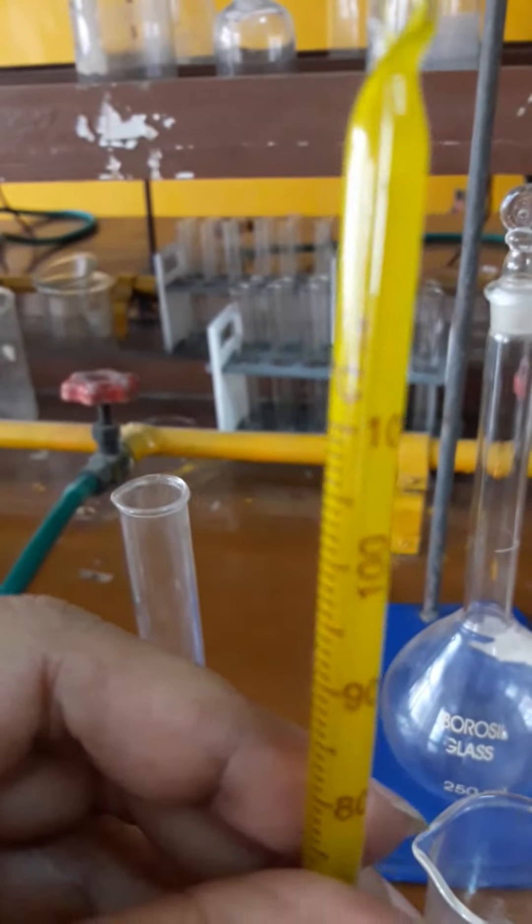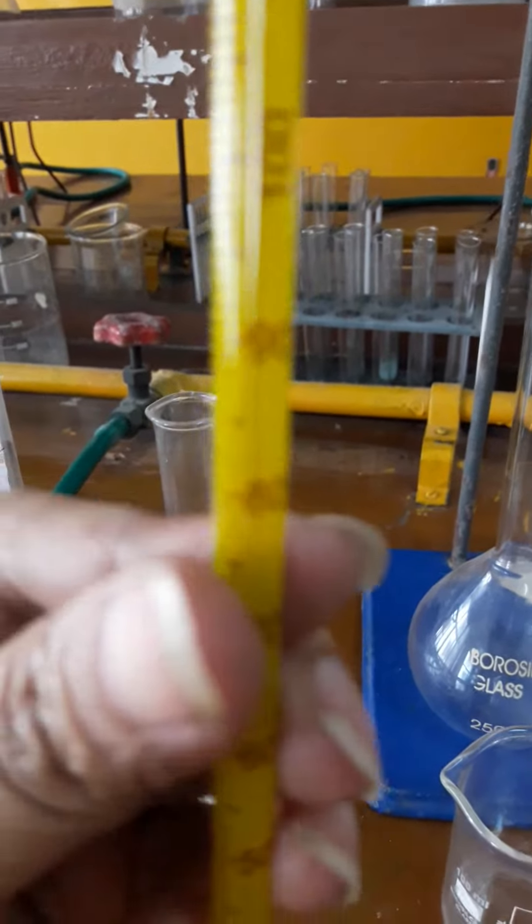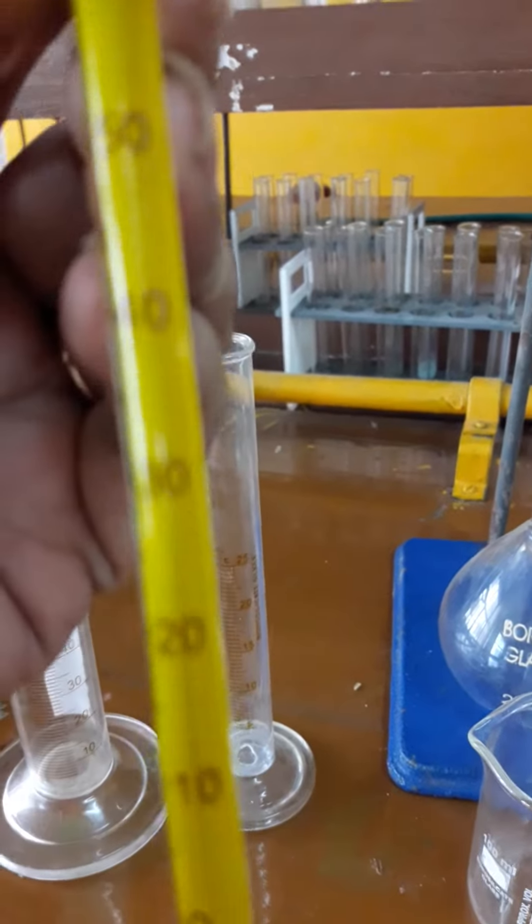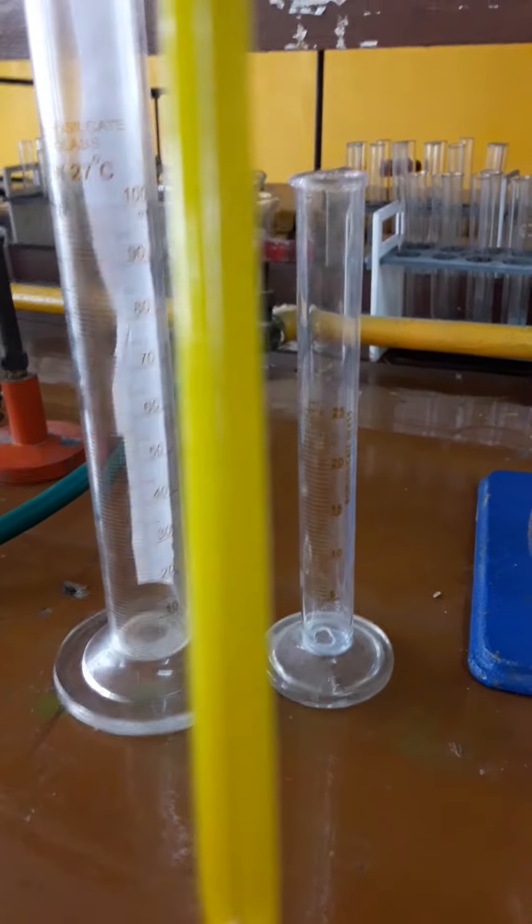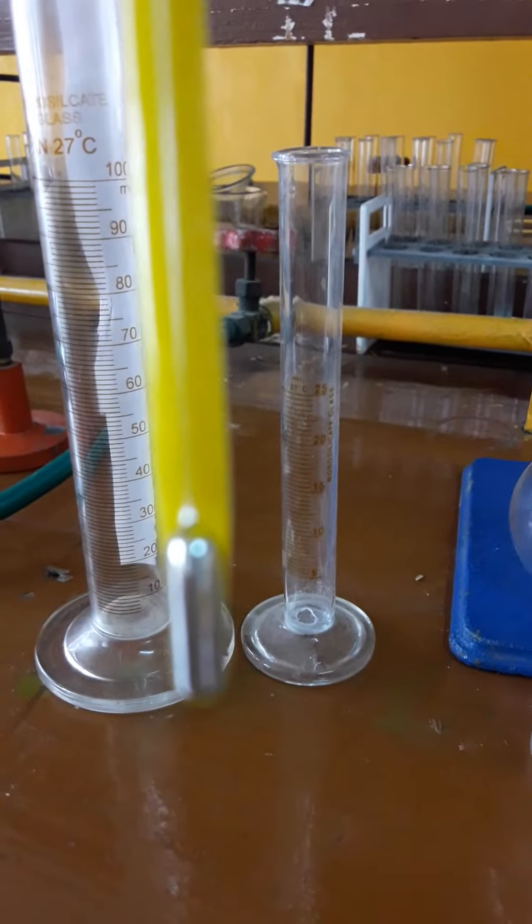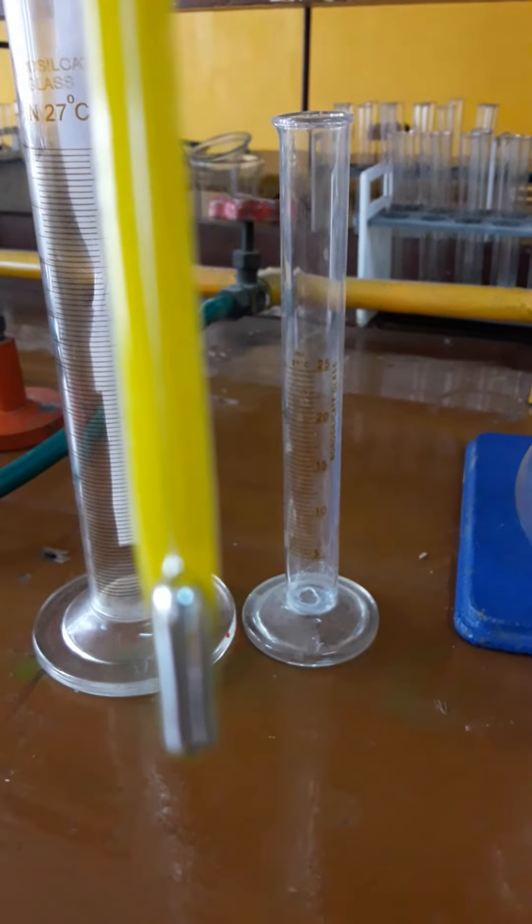This is the thermometer. You can see the Fahrenheit are written over here. This is the mercury part. If it is put into some hot portion of liquid or anything, the mercury will go up and it will show how much temperature is there.